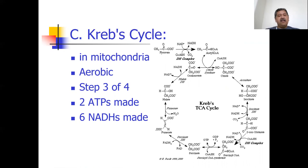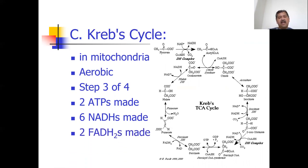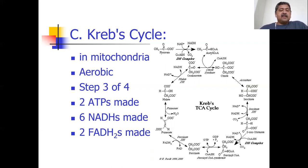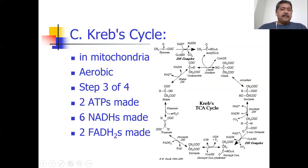Six NADHs times three ATPs per NADH gives 18 ATPs. On top of that, there's a second electron acceptor called FADH2 — you have two of these, and they're not quite as efficient as NADH. Instead of making three ATPs, FADH2 makes two ATPs, so two times two is four. So if you recall, the previous slides said you'd get 34 ATPs — here's how: six times three is 18, plus two FADH2s give four more.